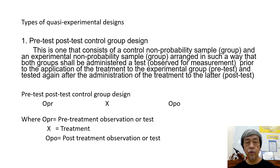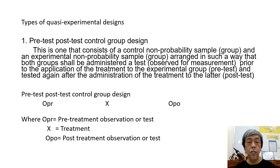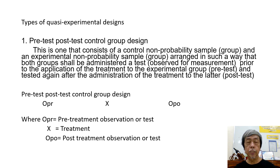This is the plan for the pre-test, post-test control group design: OPR, X, OPO — where OPR is pre-treatment observation or test, X is the treatment, and OPO is the post-treatment observation or test.